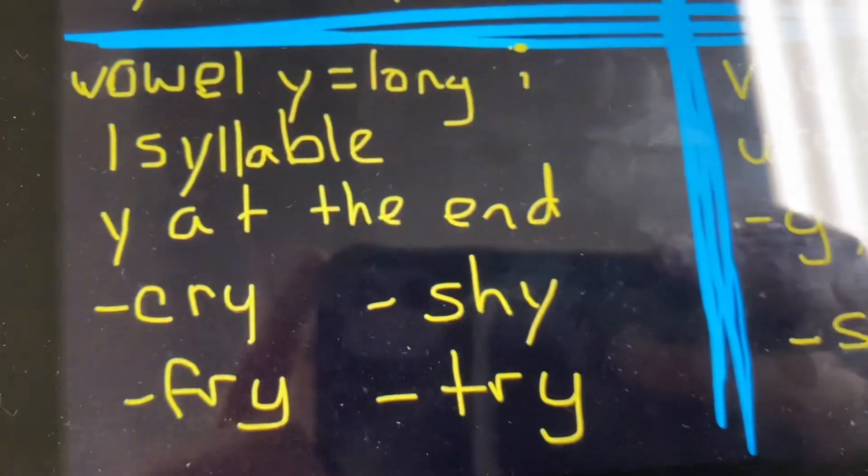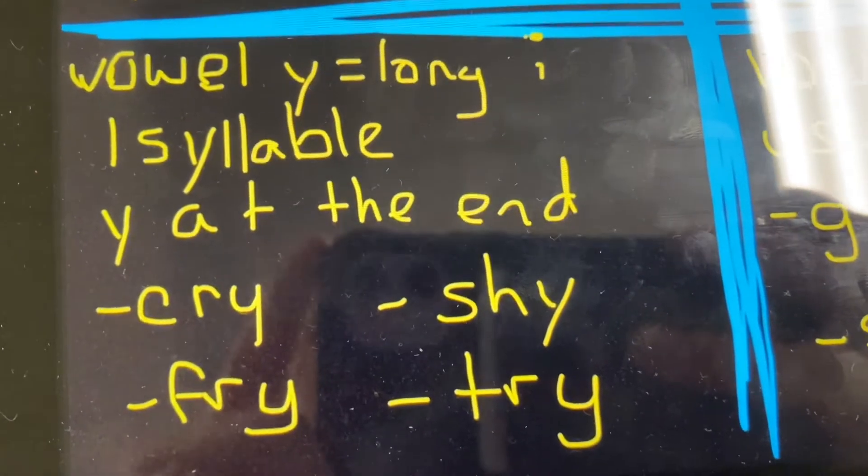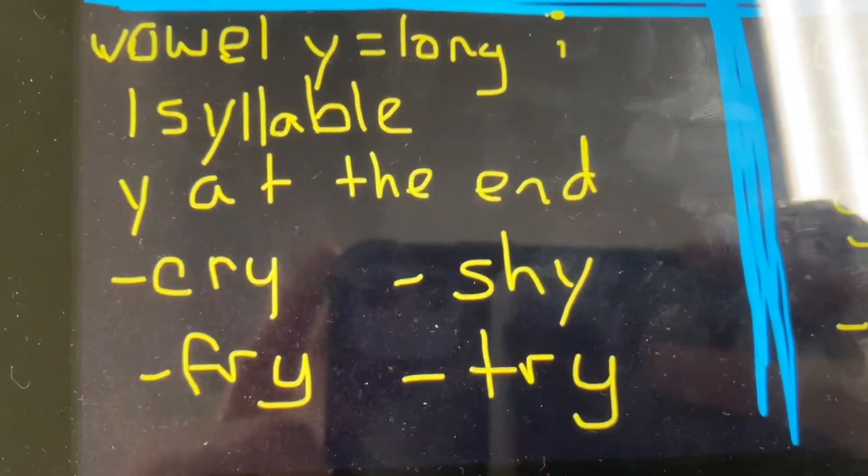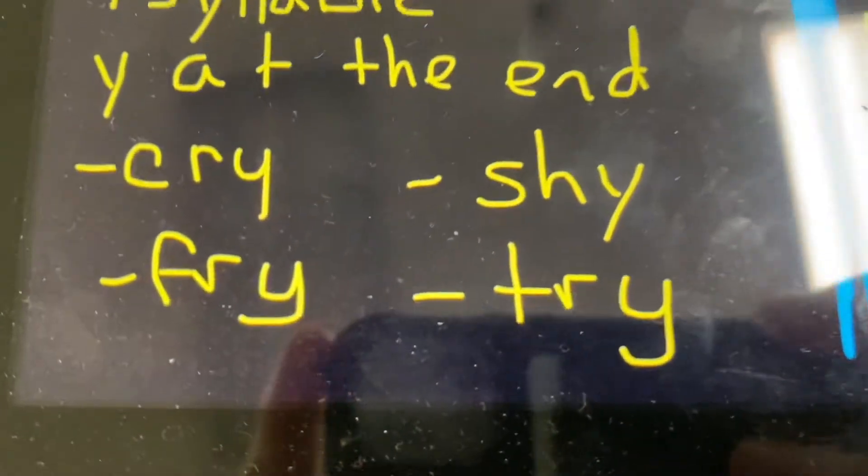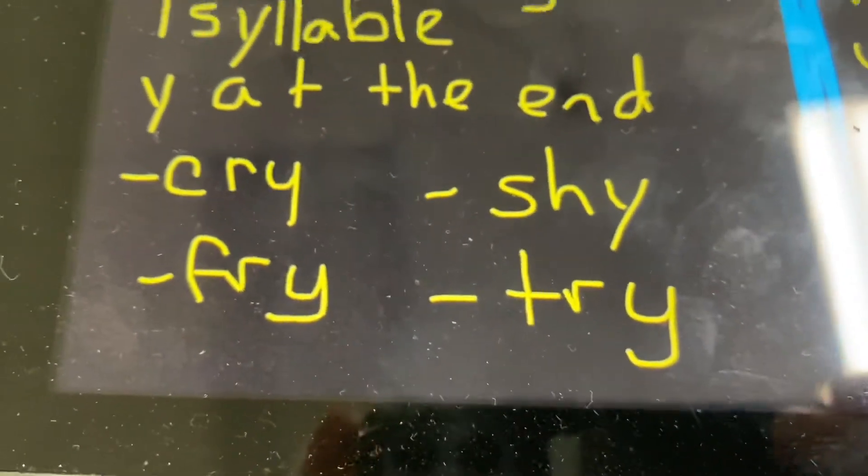When you're thinking of vowel Y with long I sound, you're thinking of a word that has one syllable and has Y at the end, such as cry, shy, fry, or try.